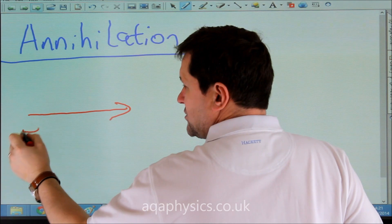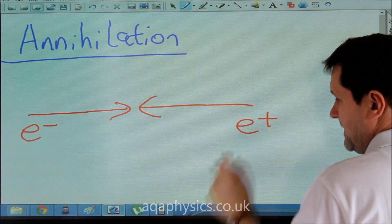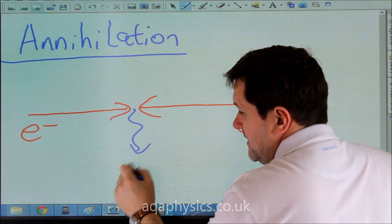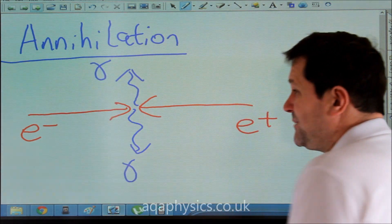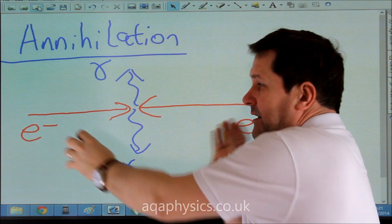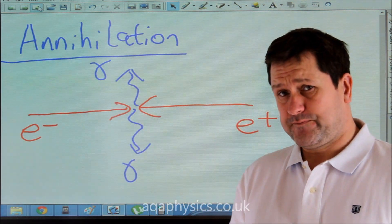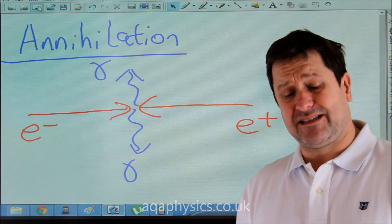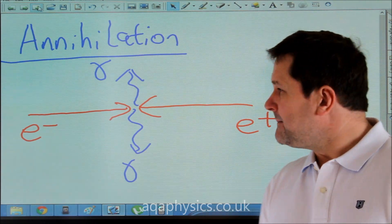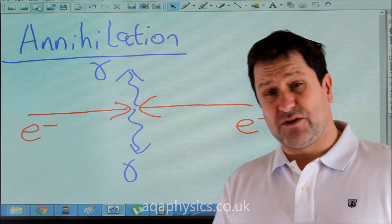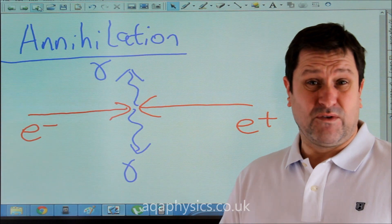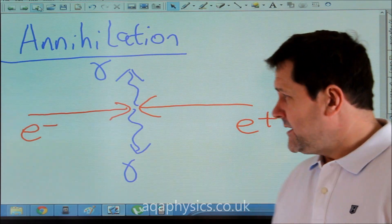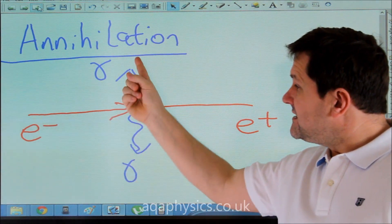If we've got an electron and a positron and they come together, the matter and the antimatter will cease to exist and you will get two gamma rays given off. The gamma rays will be identical and they will carry all of the rest energy of these two away with them. These problems could be rather complex if these had kinetic energy prior to their collision — if they've got kinetic energy prior to meeting, I need to add that to their rest energy using half mv squared. In this case, I'm going to say that the electron and the positron have zero kinetic energy when they meet, so the rest energy is going to be converted into these two gamma rays.